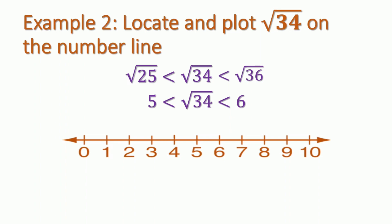Let's try to plot where the square root of 34 is on the number line. The arrow is pointing to the side closer to 6, because the square root of 34 is very close to the square root of 36, not to the square root of 25. So it's close to 6 — that's the point.